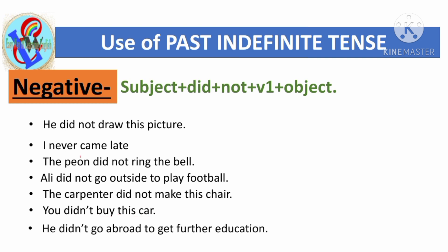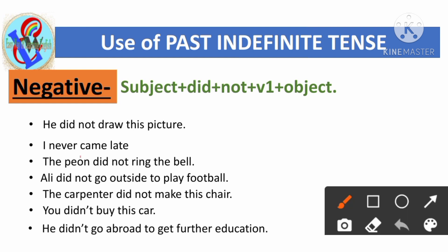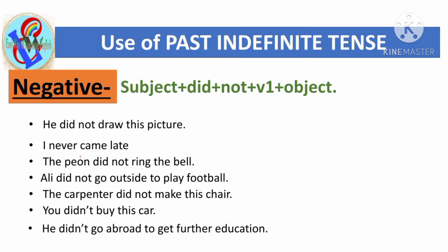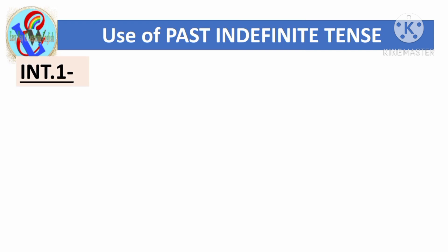'He didn't go abroad to get further education.' Here 'he' is the subject, 'didn't' meaning 'did not' is used, followed by the first form of the main verb 'go', then 'abroad' and the purpose 'to get further education'.